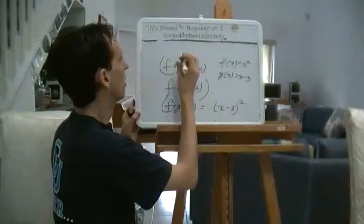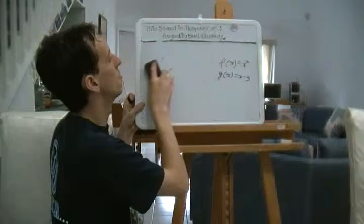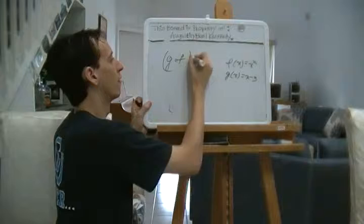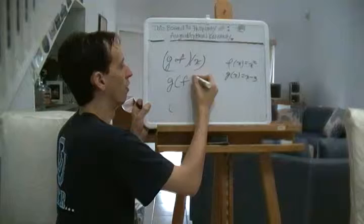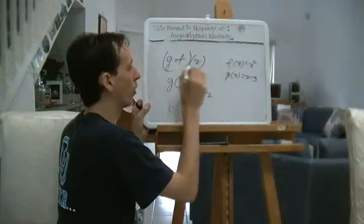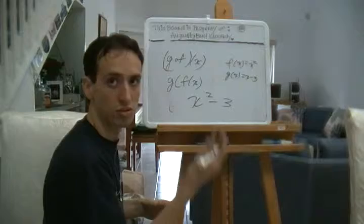And conversely, that would mean that G of F of X, in other words, we find F of X is X squared, and then we plug that wherever there was an X in G of X. So X squared minus 3 is G of F of X.